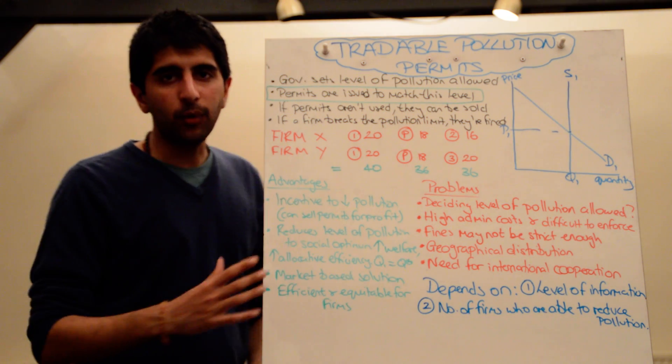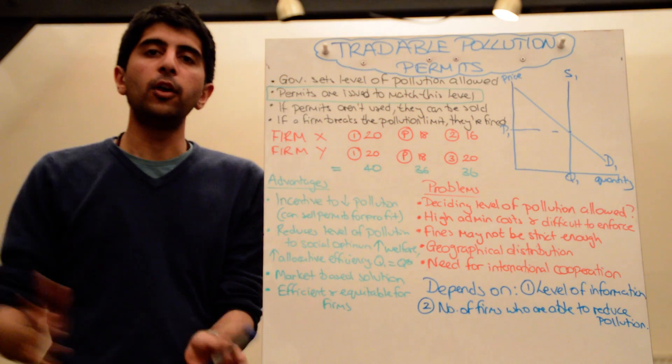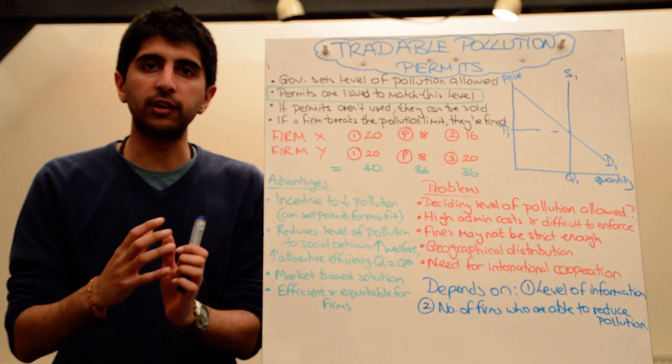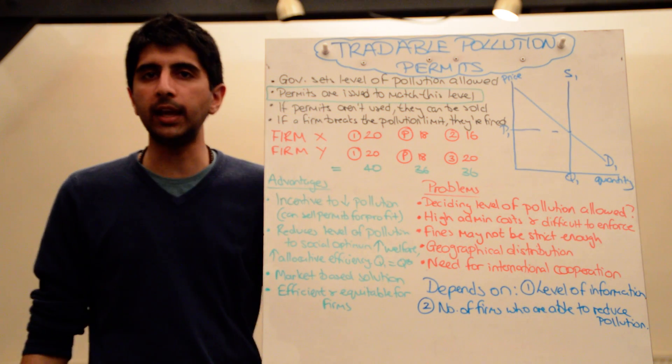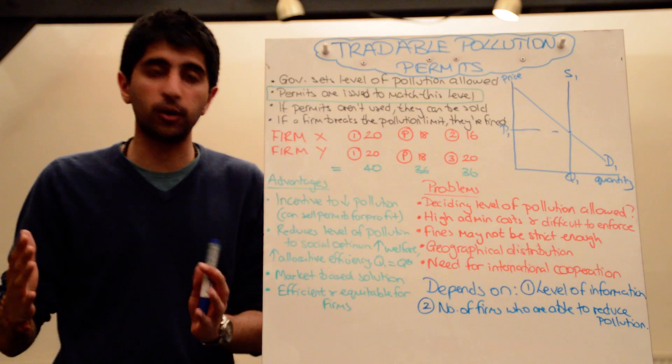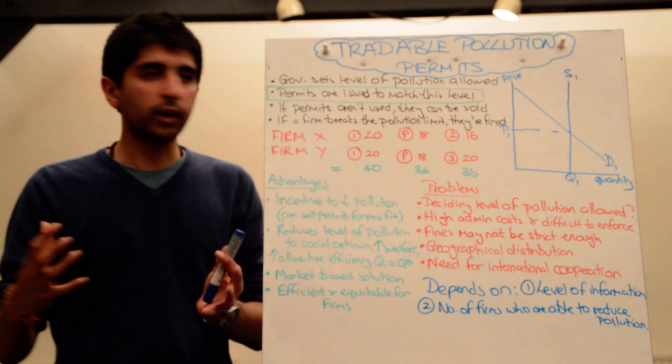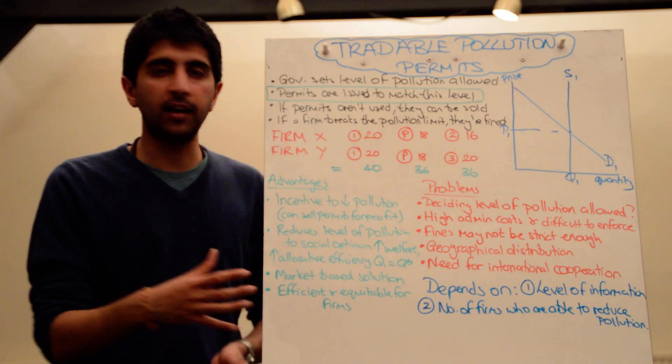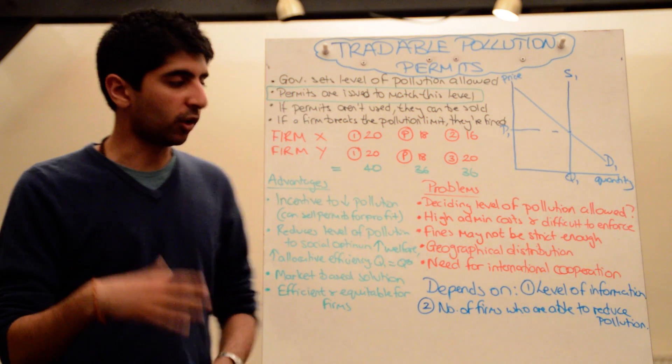And for this actually to work, because pollution is a global problem, there needs to be international cooperation. There's no point just having one country doing it, because that's not going to reduce the overall level of pollution in the global economy. There needs to be international cooperation if we're arguing that this is a global market failure, a global problem of pollution.